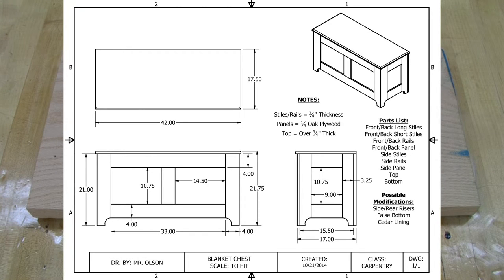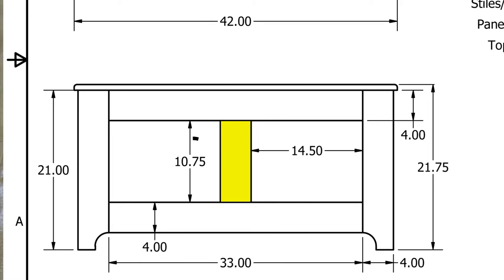For my front short style piece, this is the piece that goes in the middle between the panels. The length is 10 3/4 inches by 4 inches wide.